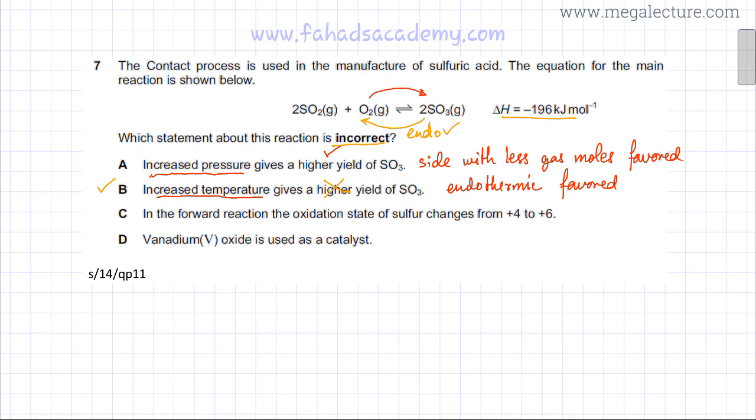And just to confirm option B I am going to look at the other options as well. Option C states in the forward reaction the oxidation state of sulfur changes from plus 4 to plus 6. You can calculate the oxidation state of sulfur over here. There are two oxygens, so that's minus 2 and minus 2, then sulfur is going to be plus 4. Over here there are three oxygens, minus 2, minus 2, minus 2. So sulfur would be plus 6.